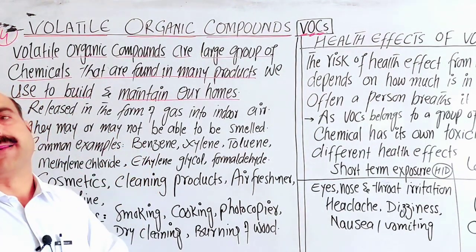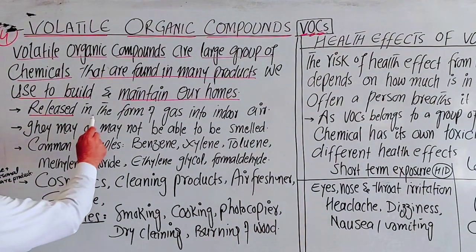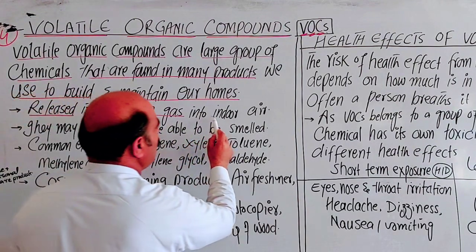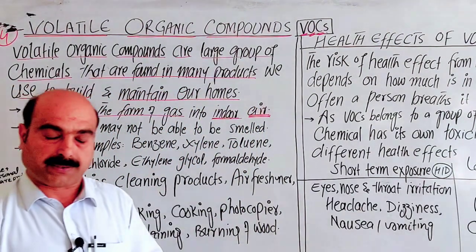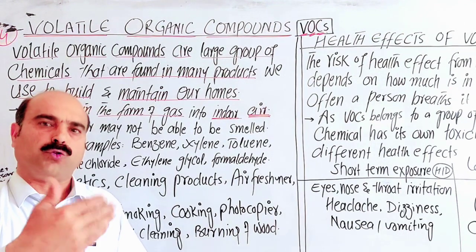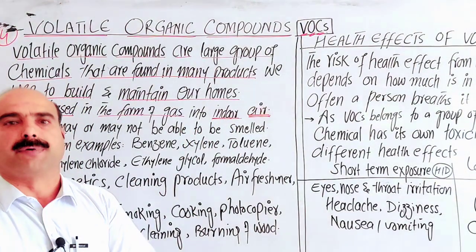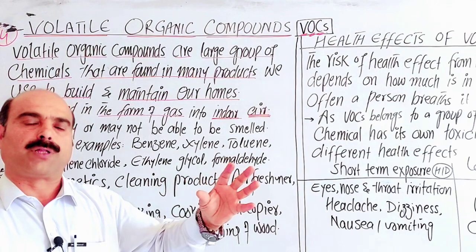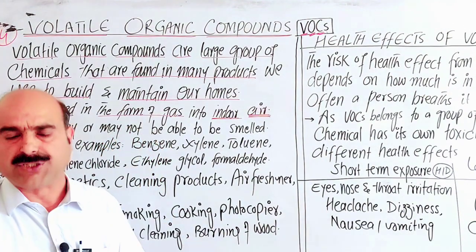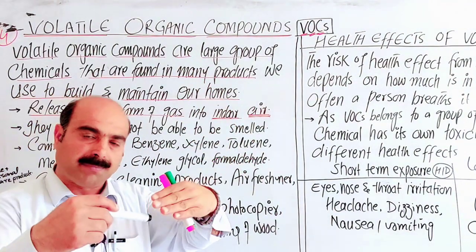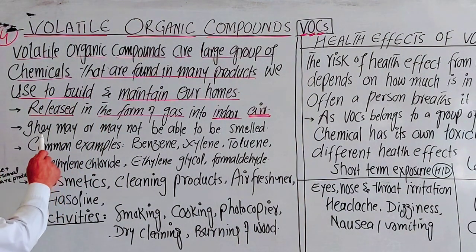When these volatile organic compounds are used, they release organic compounds in the form of gas into indoor air. The cosmetics, paints, and other chemical substances, when applied, do not stay as liquid — because they are volatile and evaporatable, they release into the indoor air. When doors are opened, they are released into the open atmosphere as well.